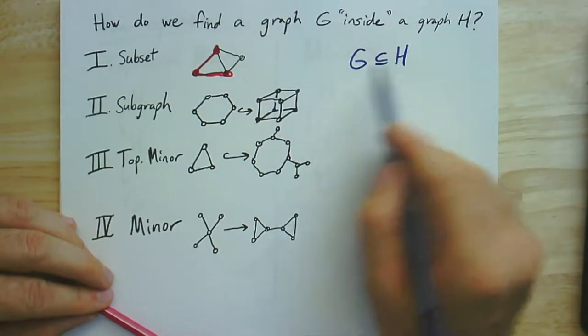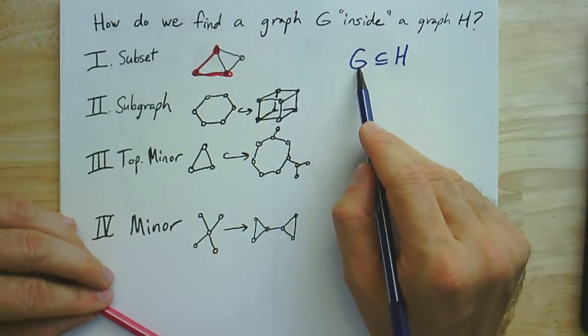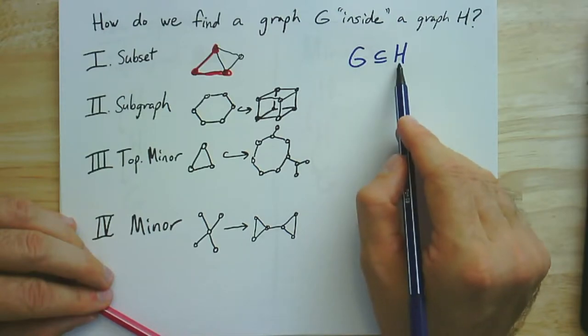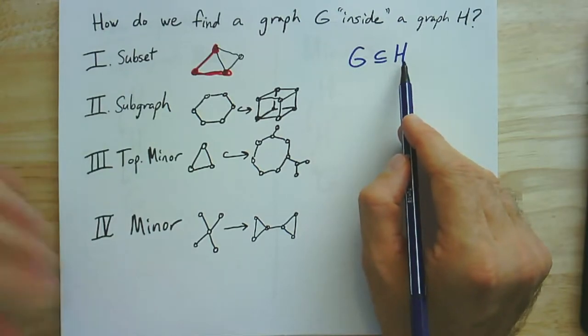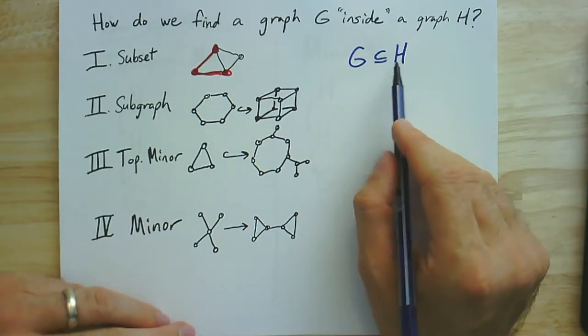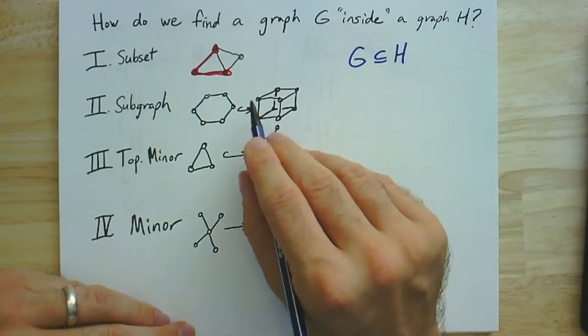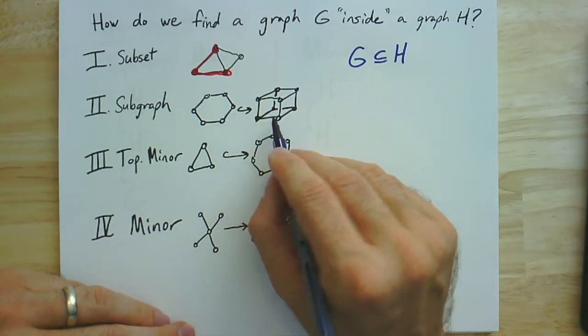This relation held when the vertices of G were a subset of the vertices of H and the edges of G were a subset of the edges of H. And we saw that there were many cases where really we had two different graphs, but we wanted to talk about one graph being a subgraph of the other.